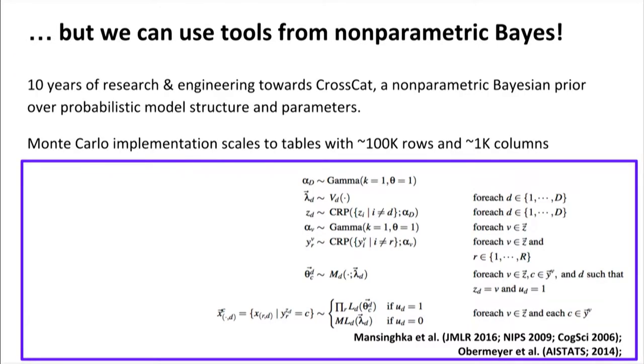The good news is, though, we can use tools from non-parametric Bayes to address these problems. So in the lab, we have some 10 years of research experience and engineering towards a non-parametric prior over probabilistic model structure. And we also build on previous implementations of Monte Carlo inference that scales this to larger data sets. And this talk is not about the math behind this prior or the inference. It's more about the practical implications of us being able to do that. So I invite you to either find the main experts that were developing the inference or go and read the papers if you have questions about that part.